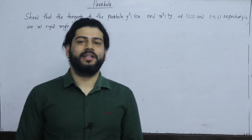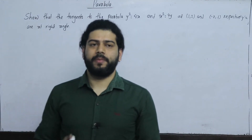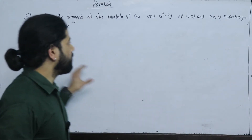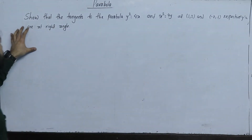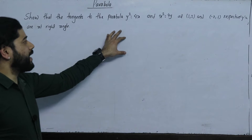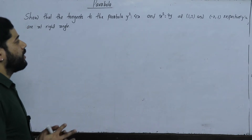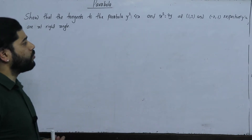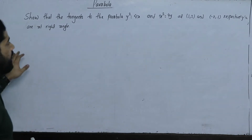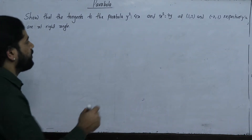I will answer the question of tangents to the parabola. The tangents to the parabola y² = 4x and x² = 4y at (1,2) and (-2,1) respectively are at right angle.